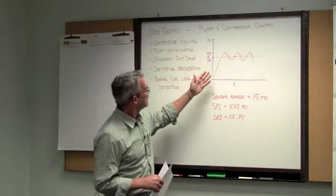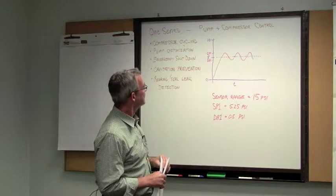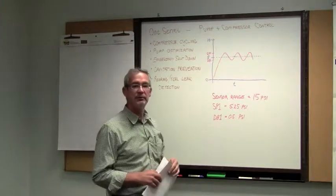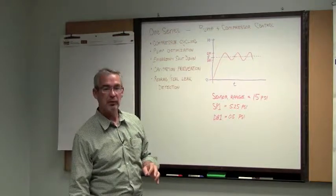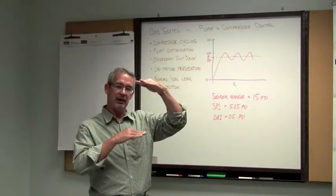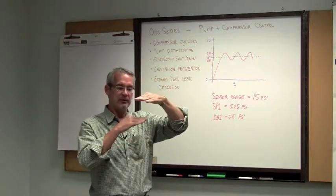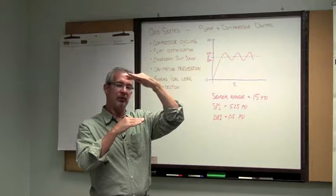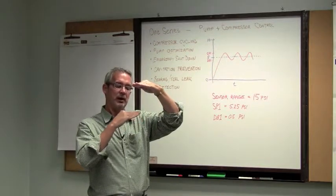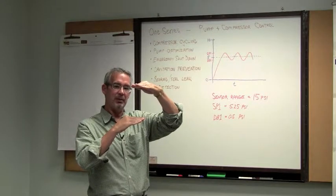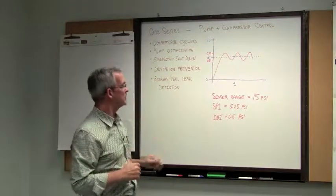Over here, I show a little chart on how to set the One Series up using the set point and the dead band to start and stop the piece of rotating equipment. Remember on the One Series that your set point and your dead band are continuously variable. I can set them anywhere over the range of the sensor. The set point, for example, may be where I start a pump or a compressor and the dead band may be where I stop it. Both of those points can be programmed and moved around over the range of the sensor.